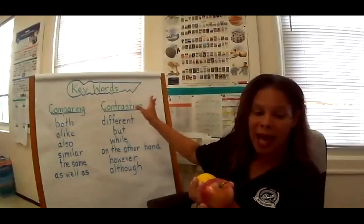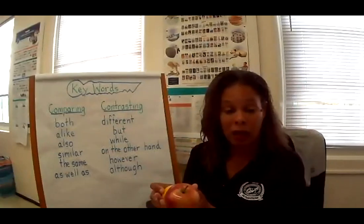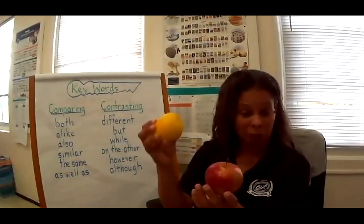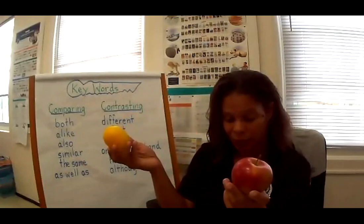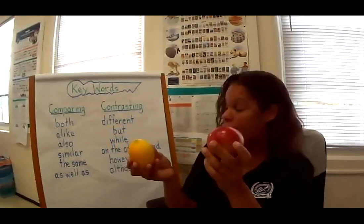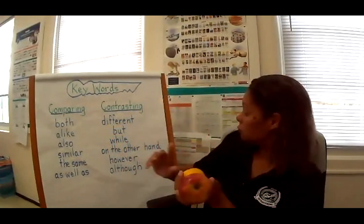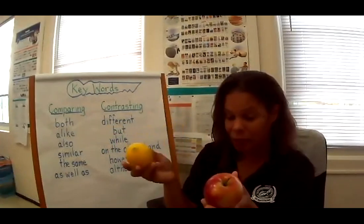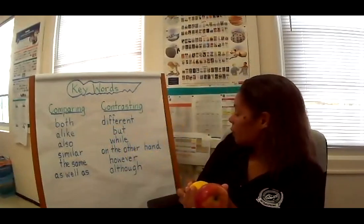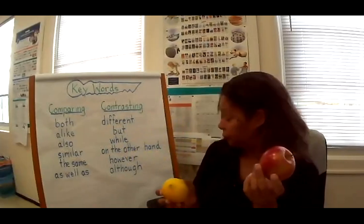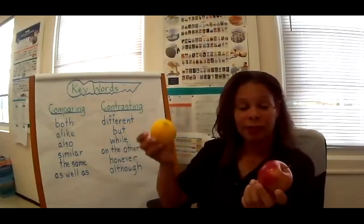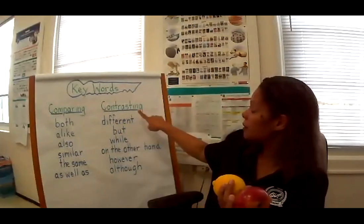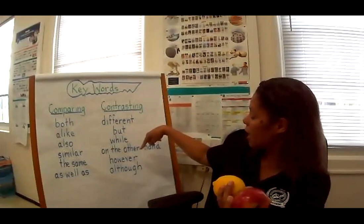Now let's say how they contrast — how are they different? First, an apple has a stem, but a lemon does not have a stem. An apple is smooth while a lemon has rough skin. An apple is sweet; on the other hand, a lemon is sour. Some words we can use to contrast: 'different,' 'but,' 'while,' 'on the other hand,' and 'however.'